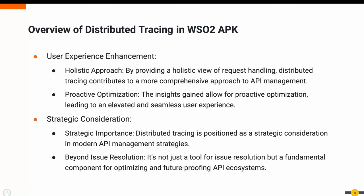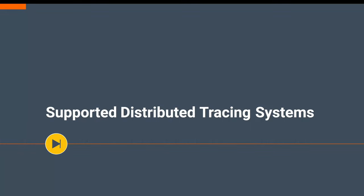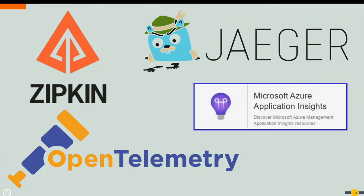In conclusion, distributed tracing is not just a feature — it's a strategic consideration. Positioned as a strategic component, it goes beyond issue resolution to optimize and future-proof your API ecosystem. As you explore WSO2 APK's distributed tracing capabilities, remember it's about more than just observing — it's about transforming the way you manage APIs. The supported distributed tracing systems within WSO2 APK are Jaeger, Zipkin, Azure Application Insights, and OTLP GRPC at your disposal. Each system brings its unique strengths, allowing you to tailor your tracing strategy to your specific requirements and infrastructure.